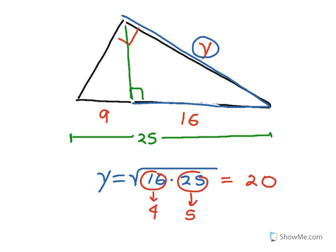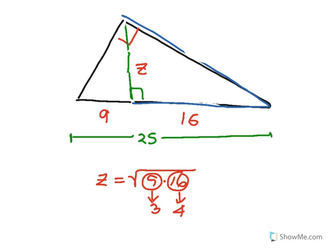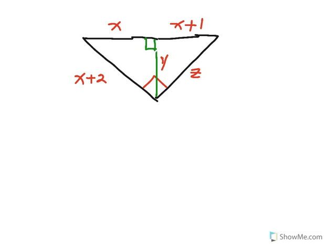For practice, the altitude is the geometric mean between the two segments of the hypotenuse, 9 and 16. So the altitude equals the square root of 9 times 16 — a 3 and a 4 come out and multiply together, giving an altitude length of 12. Now let's try a grand example that uses all of the geometric mean formulas with respect to the proportional sides of these similar right triangles.